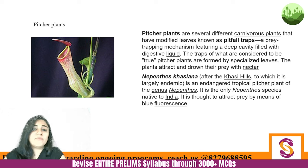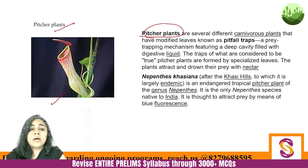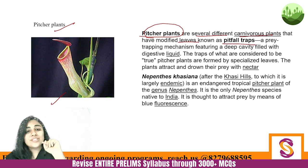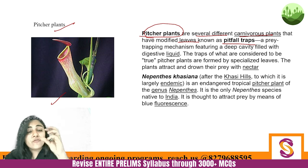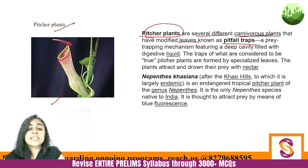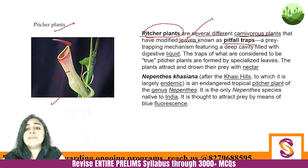Then we have the famous pitcher plant. Pitcher plant is not one plant at all — it is a huge category of plants: several different carnivorous plants with modified leaves known as pitfall traps. An important question often asked is which part of the plant modifies itself into the pitcher shape. The answer is leaves — the leaves modify themselves. Their traps are formed by specialized leaves, and they attract their prey — insects — by nectar.